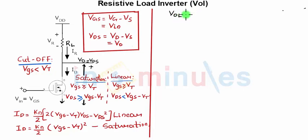VOL is nothing but output low, that means my input is going to be high equal to VDD, and with that we start ID in linear is equal to IR, means the current flowing across the resistor.